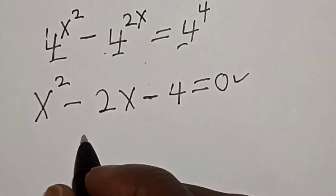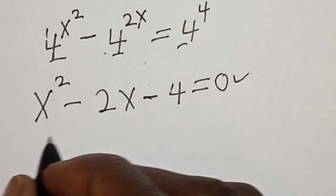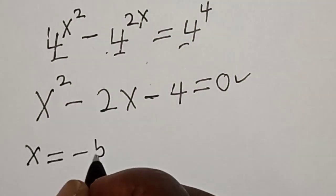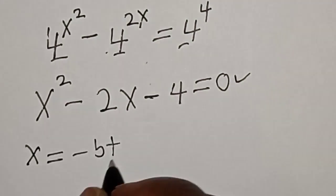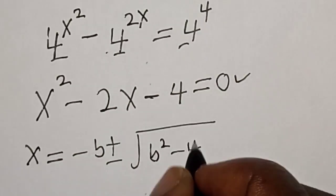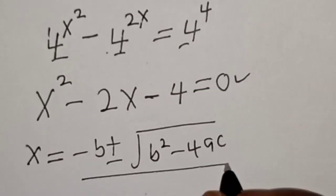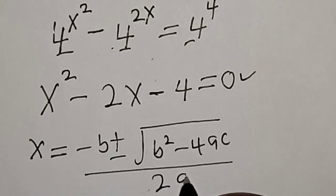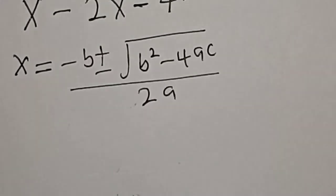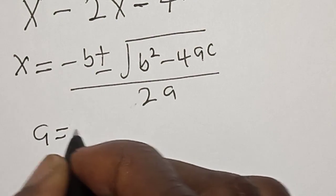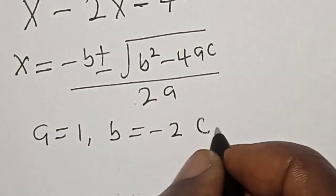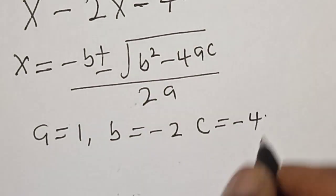We solve using the quadratic general formula: s equals minus b plus or minus square root of b squared minus 4ac, divided by 2a. Here, a equals 1, b equals minus 2, and c equals minus 4.